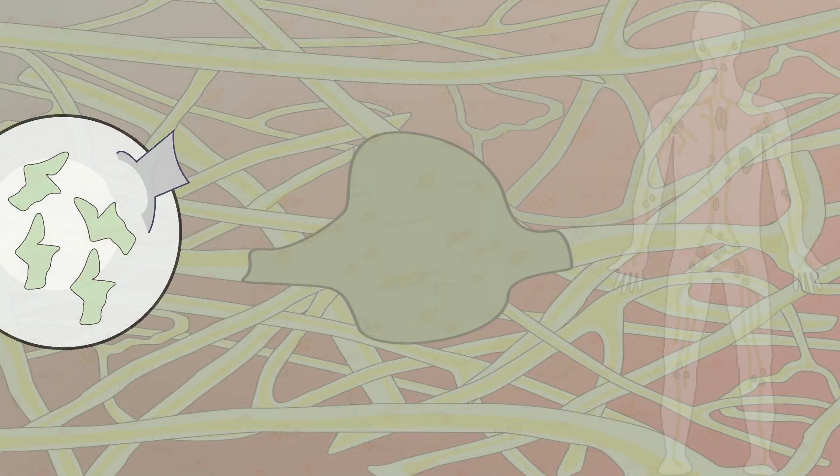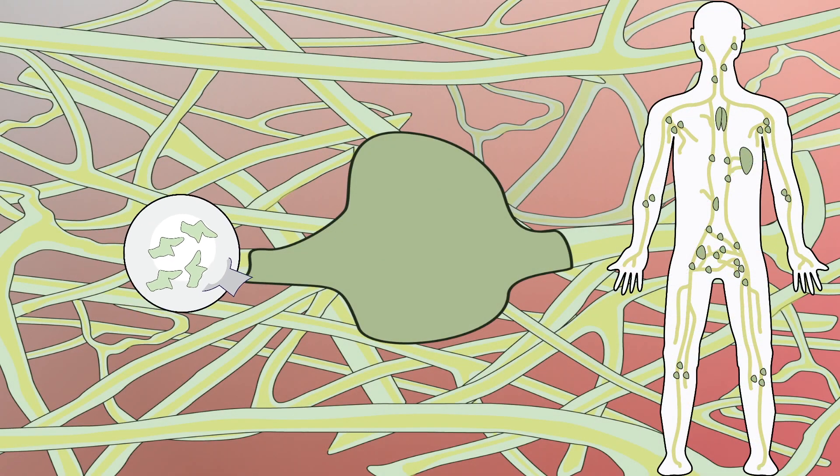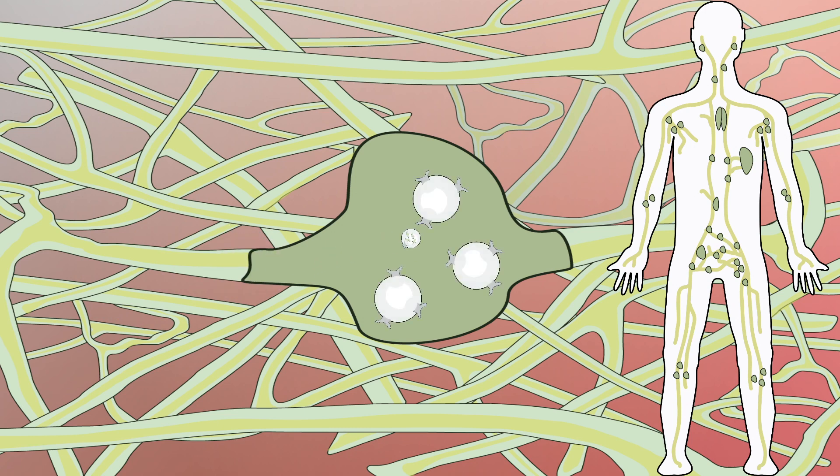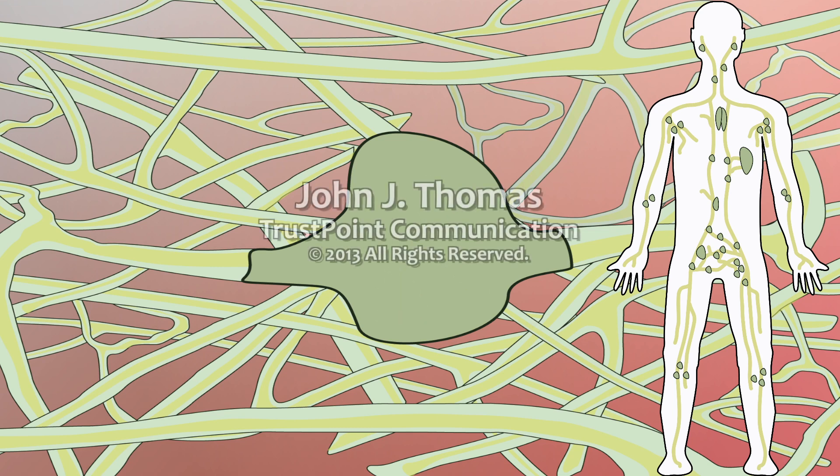Some phagocytes then travel to the lymph nodes, where they present the antigen pieces to lymphocytes, which help with building immunity to the antigens.